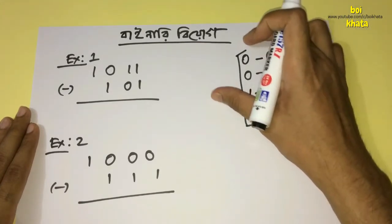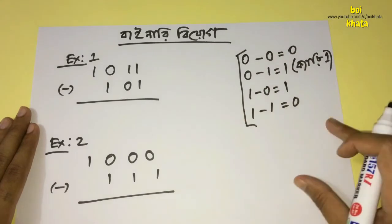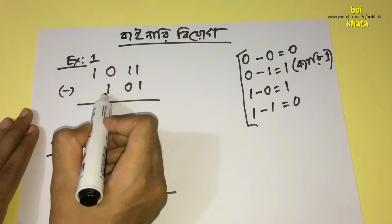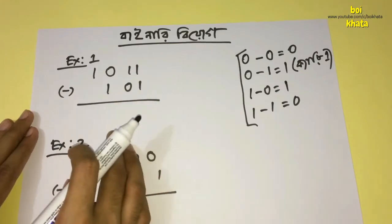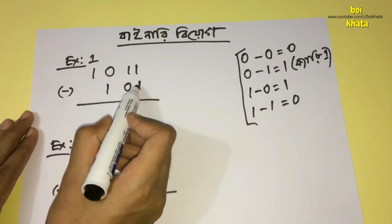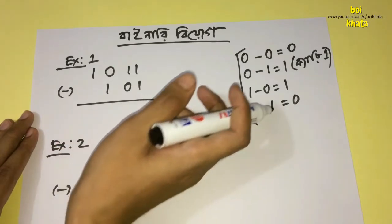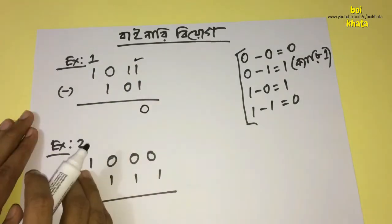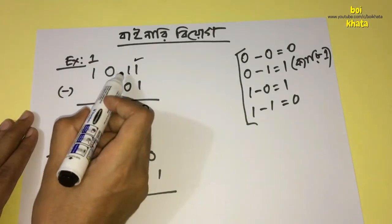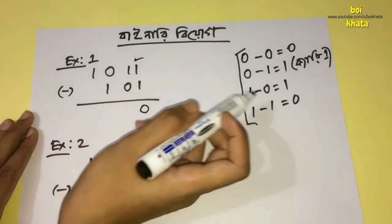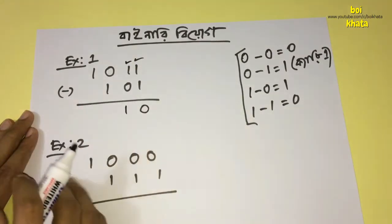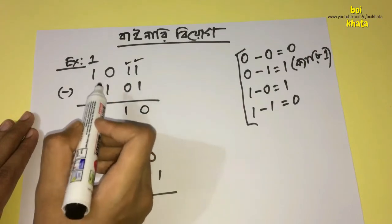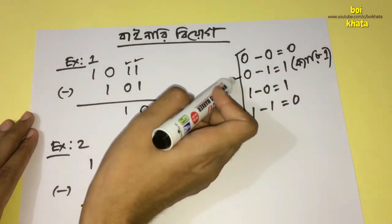This is Example 1. One is 1, 0. We subtract 1 from 1 — 1 minus 1 gives 0. So we write 0 down. Our first line is now complete.